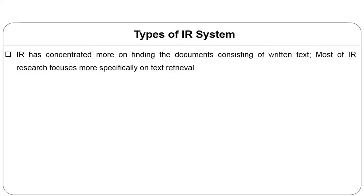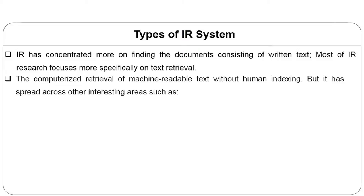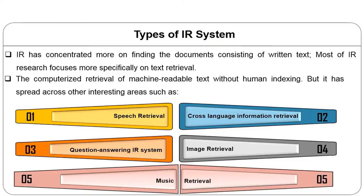IR has concentrated more on finding documents consisting of written text or textual documents. Most IR also focuses on text retrieval, but nowadays there are other kinds of retrieval systems. These can be speech retrieval, question-answering IR systems, cross-language information retrieval systems, image retrieval systems, or audio retrieval like music retrieval systems. IR systems have advanced and there are many types depending upon what they address, whether speech, music, image, cross-language retrieval, or question answering systems.